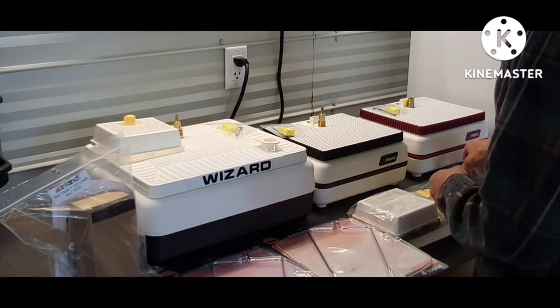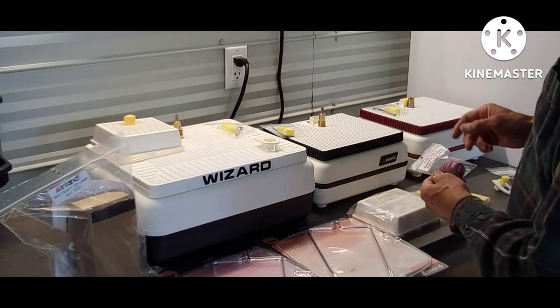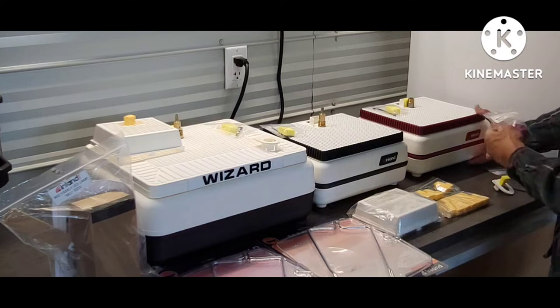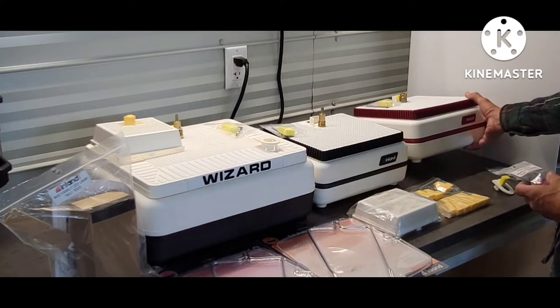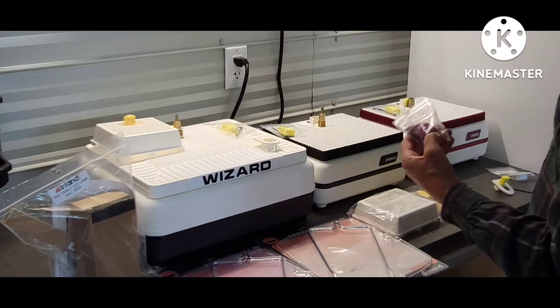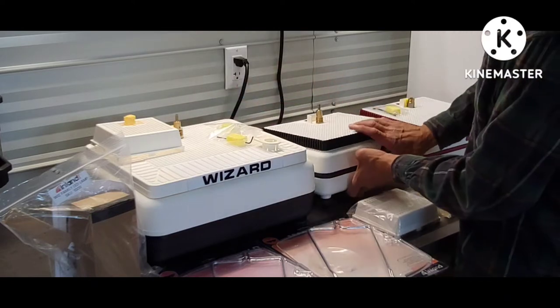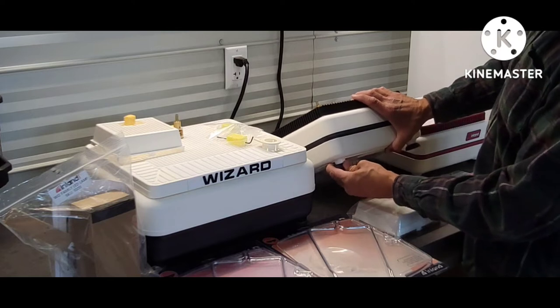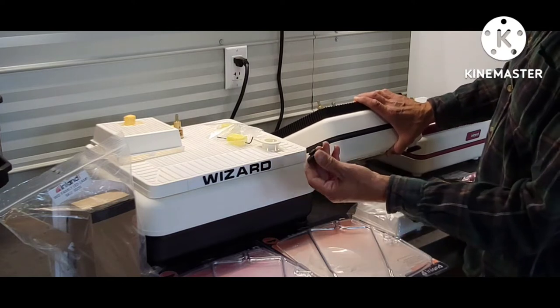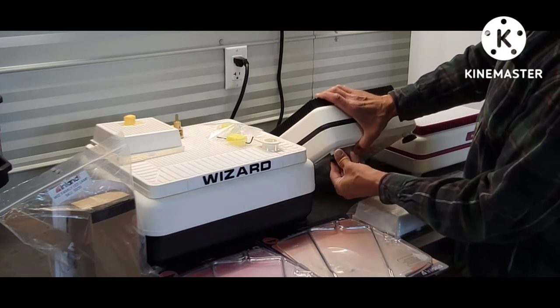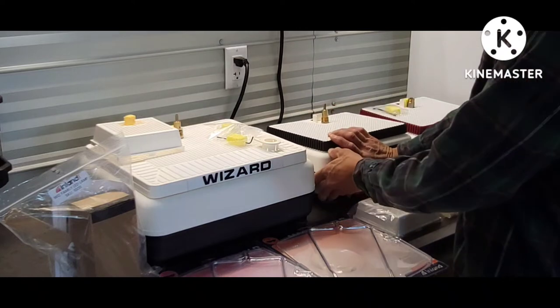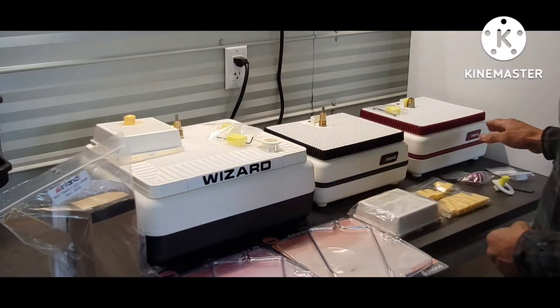They also have replacement feet for the machines. The older wizards used to have maroon feet. So the maroon feet and black feet are available for the machines. Easy to replace. You just basically pull it out as a little arrowhead type fitting and then just push it back in. So if you're missing feet, you have replacement feet.